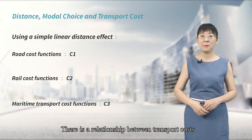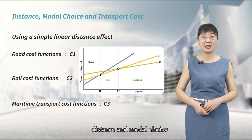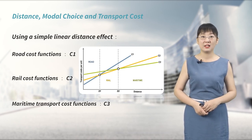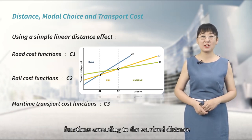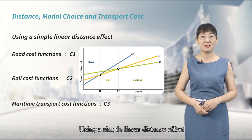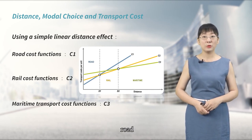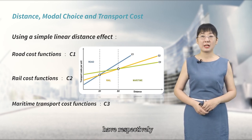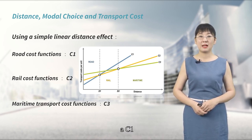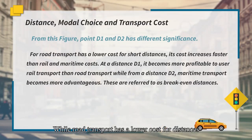This figure shows the relationship between transport cost, distance, and mode choice. Transport modes have different cost functions according to service distance. Using a simple linear distance effect, road, rail, and maritime transport can be represented as cost functions C1, C2, and C3 respectively. While road transport has a lower cost for short distances, its costs increase faster than rail and maritime costs.